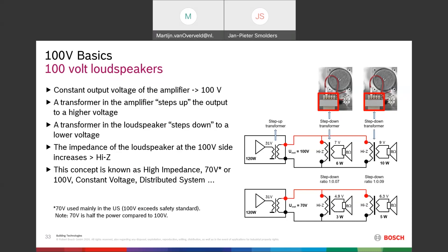One thing to remember: some systems also have a 70V output. When using 70V instead of 100V, it is half the power compared to a 100V output, which also means the sound pressure level from your loudspeakers will be reduced by 3 dB.